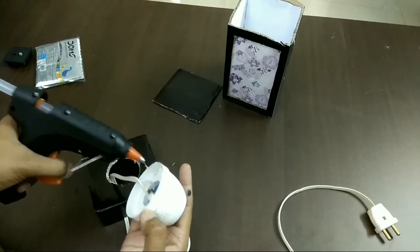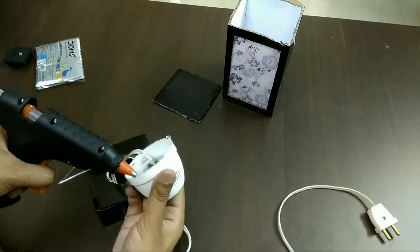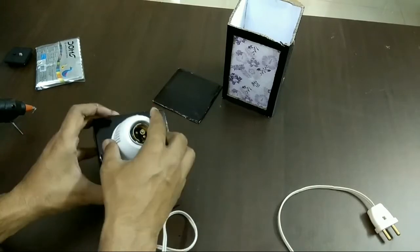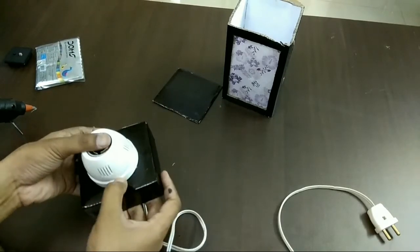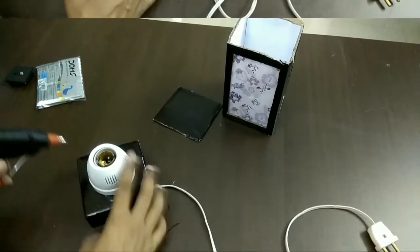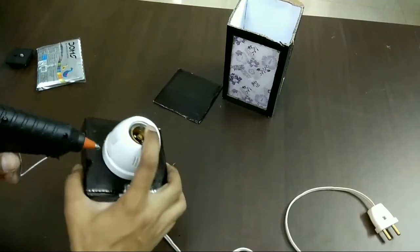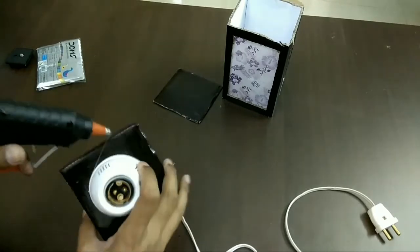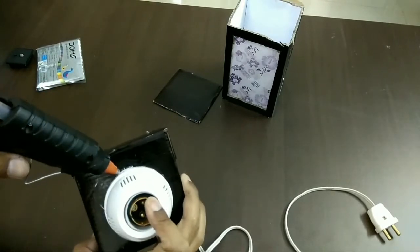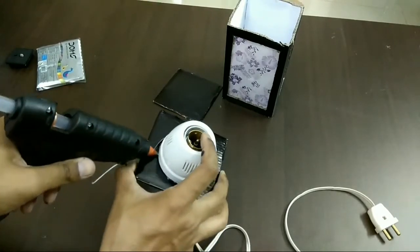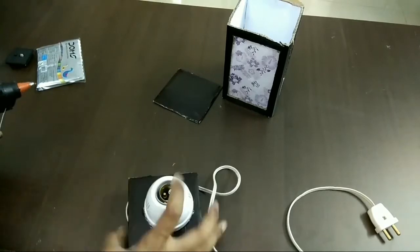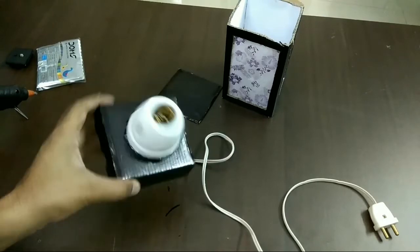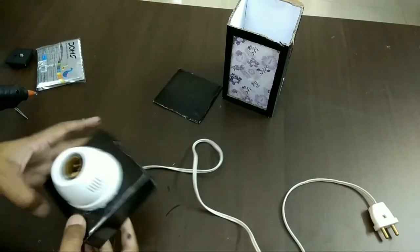Now using the hot glue gun, just fix the lamp. Sorry, just fix the bulb holder. I am using the hot glue gun. Just fix it. I am using a lot of hot glue so that it doesn't come out. See, it's completely stuck now.